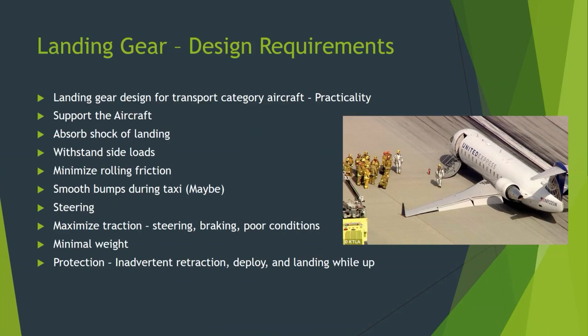The landing gear has provisions for steering, and we need to maximize traction especially in poor weather conditions like snow and ice. Minimizing weight leads to inefficiency in the aircraft, so we want to make it strong but lightweight. There are also protections specifically for inadvertent retraction while the gear is down — especially if the airplane is sitting on it — or deployment while the gear is up.